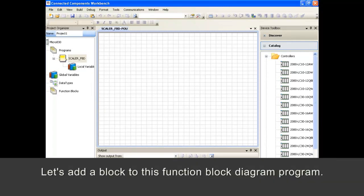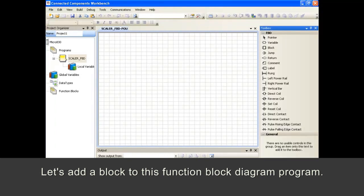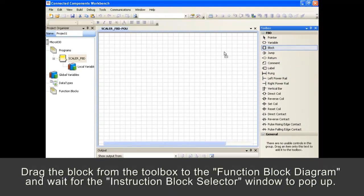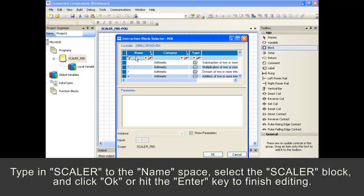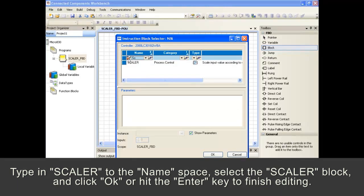Let's add a block to this function block diagram program. Drag the block from the toolbox to the function block diagram and wait for the instruction block selector window to pop up. Type in Scalar to the namespace, select the Scalar block, and click OK or hit the Enter key to finish editing.